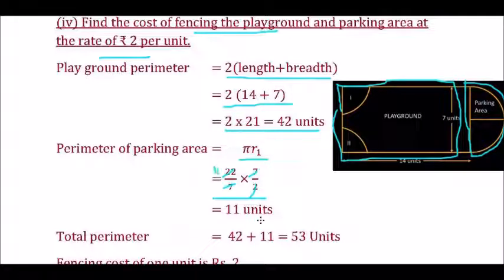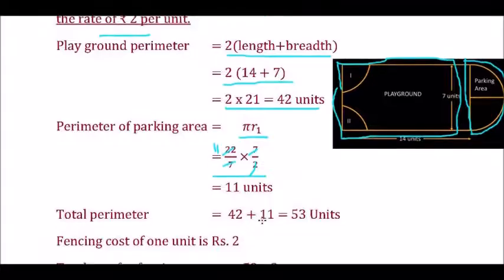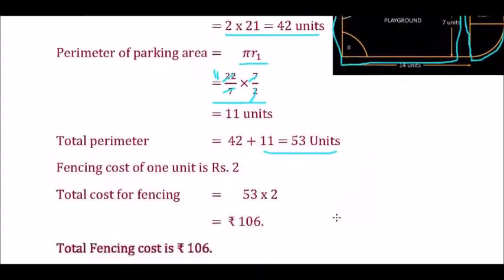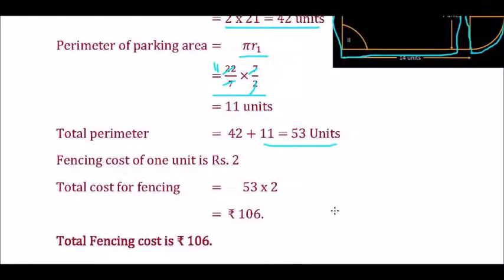Total perimeter equals 42 + 11 = 53 units. Since fencing cost is Rs. 2 per unit, the total cost of fencing is 53 × 2 = Rs. 106. So the total fencing cost is Rs. 106.